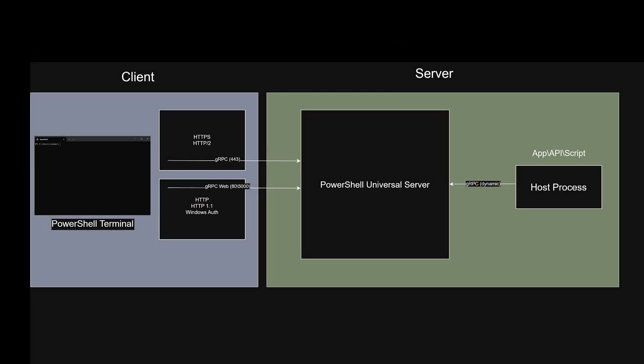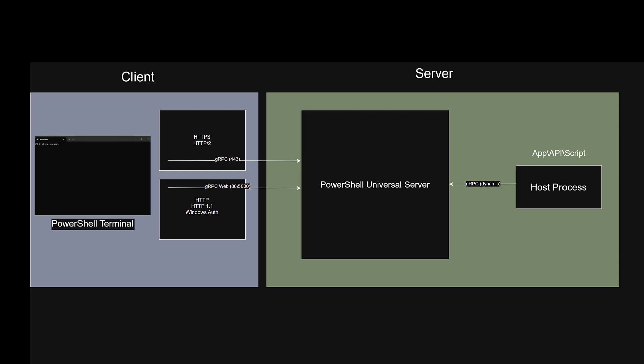Now that we've talked about accessing PowerShell Universal remotely, let's talk about accessing it internally from within PowerShell Universal. You may want to execute scripts from other scripts, execute scripts from your apps or APIs, gather information about your server in scripts, or do things like create new schedules or update variables within scripts. All of these require access to the PowerShell Universal management APIs. By default, PowerShell Universal runs in strict mode, which requires that all management API calls through the PowerShell module go through the front end of the web server.